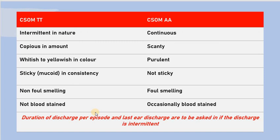The discharge in CSOM-TT is usually not foul-smelling. When there is severe infection it becomes foul-smelling, otherwise it is usually not foul-smelling. But the discharge in CSOM aticoantral type is foul-smelling because of persistent low-grade infection by anaerobic organisms and bone erosion that usually leads to sequestrum formation. So the discharge in CSOM aticoantral type is foul-smelling due to the presence of cholesteatoma.